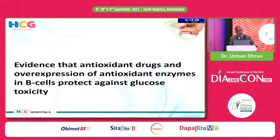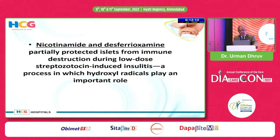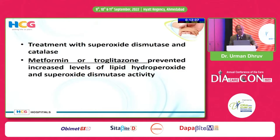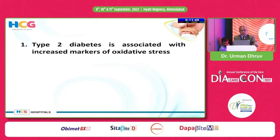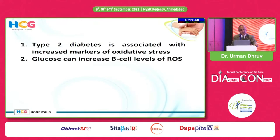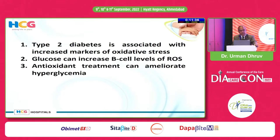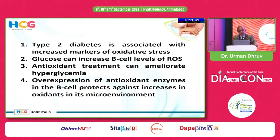Evidence shows antioxidant drugs and overexpression of antioxidant enzymes in beta cells protect against glucose toxicity. In animal and preclinical studies, nicotinamide, desferrioxamine, metformin, troglitazone, superoxide dismutase, and catalase have all protected beta cells in diabetic GK rats. Vitamin E has shown similar influence. We now know type 2 diabetes is associated with increased markers of oxidative stress, glucose can increase beta cell ROS levels, and antioxidant treatment can ameliorate hyperglycemia.